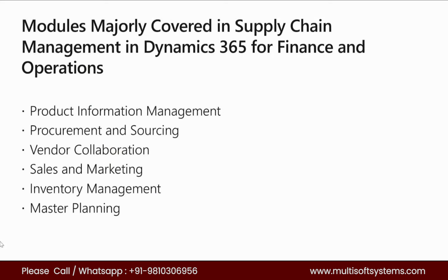Next is Sales and Marketing. In Sales and Marketing we have the option to create a customer, configure what is required, and create sales orders. These are all called modules: Product Information Management module, Procurement and Sourcing module, Vendor Collaboration module, Sales and Marketing module. Then we discuss Inventory Management — how to do warehouse activities, item arrivals, and transfers within the warehouse.